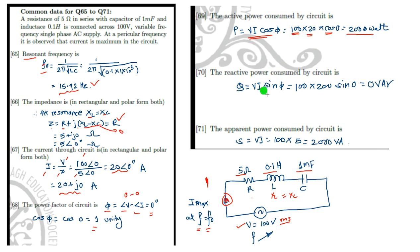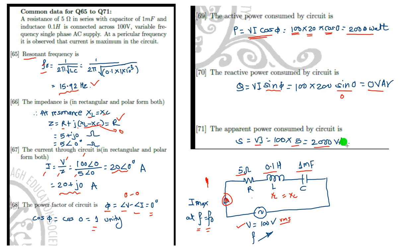The reactive power is VI sin φ. Since φ = 0°, sin(0°) = 0, so the reactive power is 0 VAR. Though there is XL and XC, they cancel each other, hence no reactive power consumption. The apparent power S = VI = 100 × 20 = 2000 VA. As reactive power is absent, P equals S in this case.